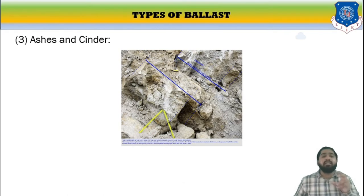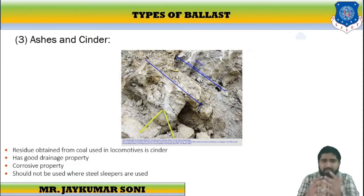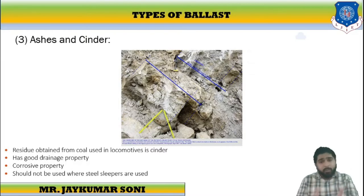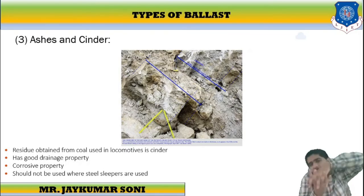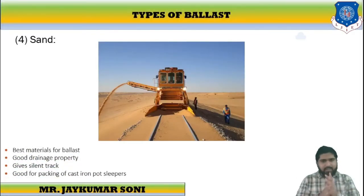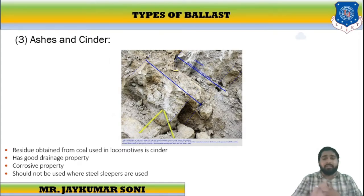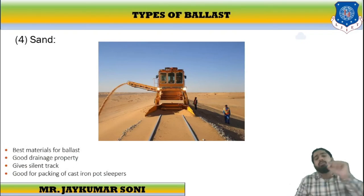The third type is ashes and cinders, which is the residue obtained after coal is burned. It can be in powder form or in broken-stone form. It has good drainage properties, but also has corrosive properties, so it should not be used where steel sleepers are present as proper holding will not be achieved. The fourth type is sand, which is an excellent material with good drainage quality. It gives a silent track, reduces noise pollution, and is good for packing of cast iron sleepers. Therefore, if steel sleepers are used, do not use ashes; if cast iron is used, use sand.